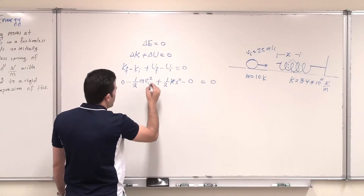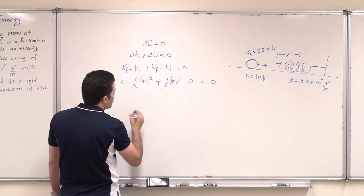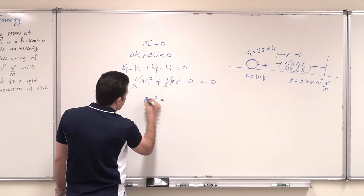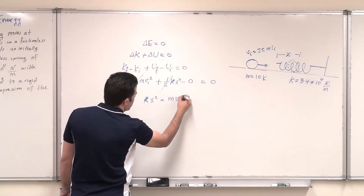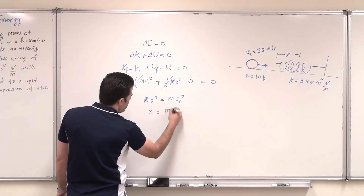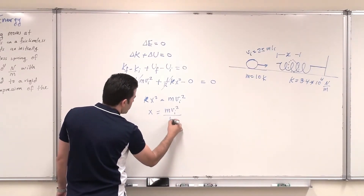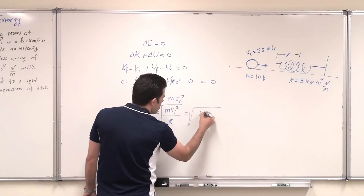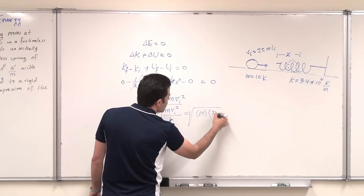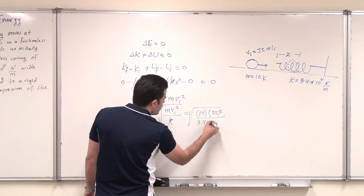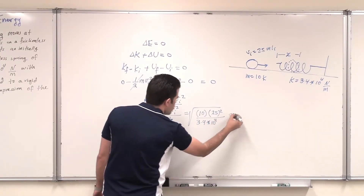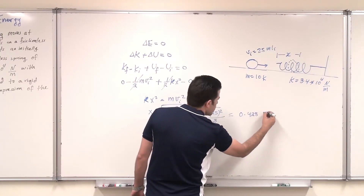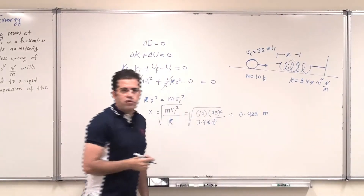Rearranging the equation and canceling the factor of one-half: kx squared equals mv initial squared, so x equals the square root of mv initial squared divided by k. Substituting: mass is 10 kilograms, v initial is 25 meters per second squared, divided by k which is 3.4×10⁴. This gives x equal to 0.428 meters. This is the distance of horizontal compression of the spring. Thank you.